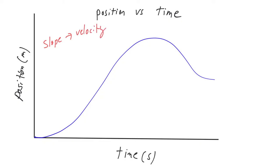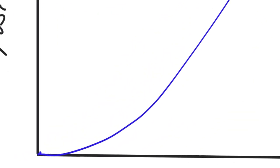Today we're going to look at a graph that's not so simple — it has some curvature to it — and we're going to analyze it in the same way. Here's our graph. I'm going to zoom in on it so we can get a better picture of what's happening in various segments.